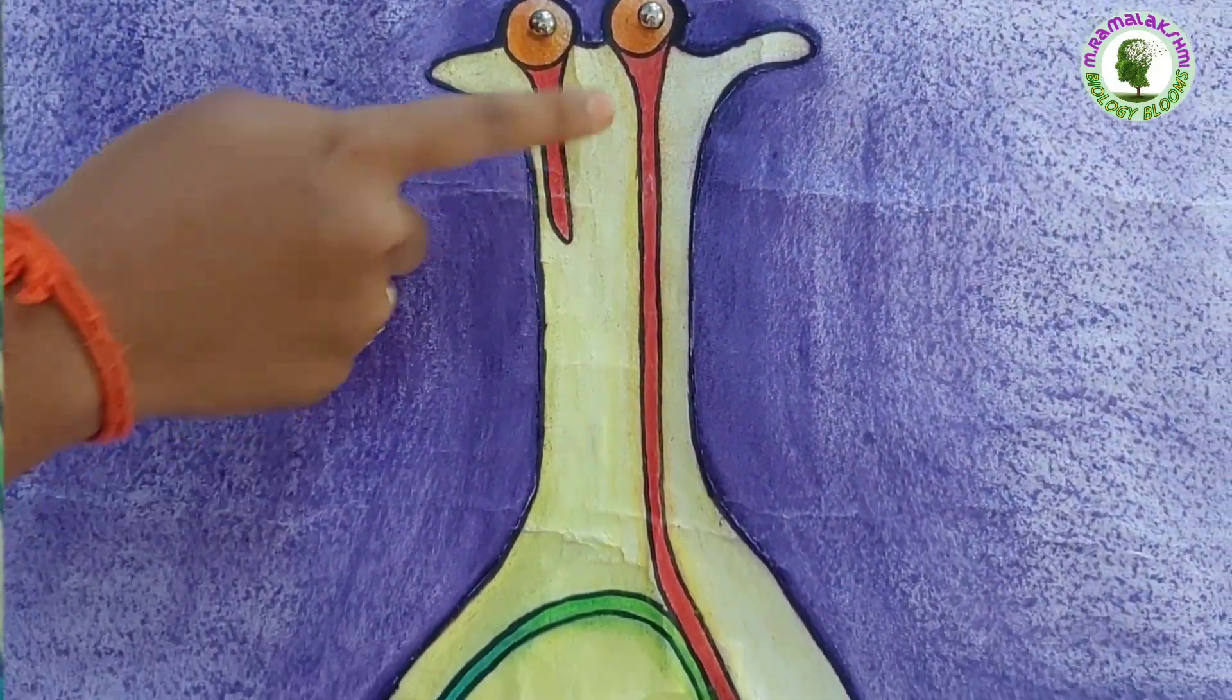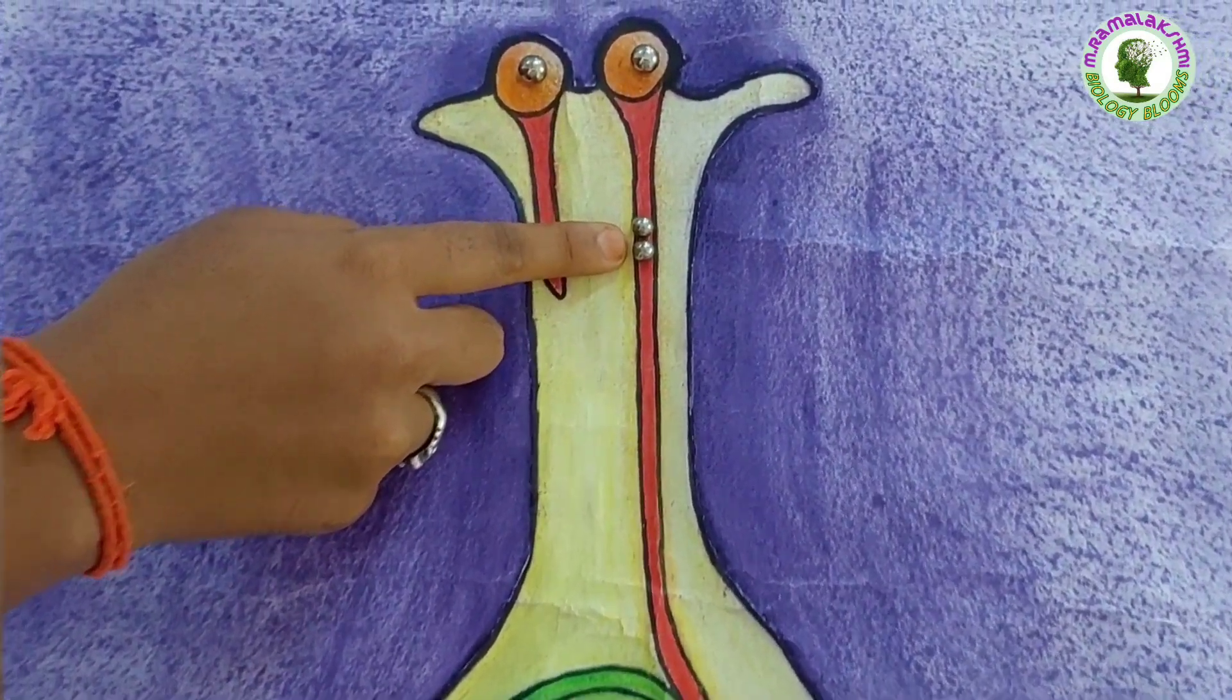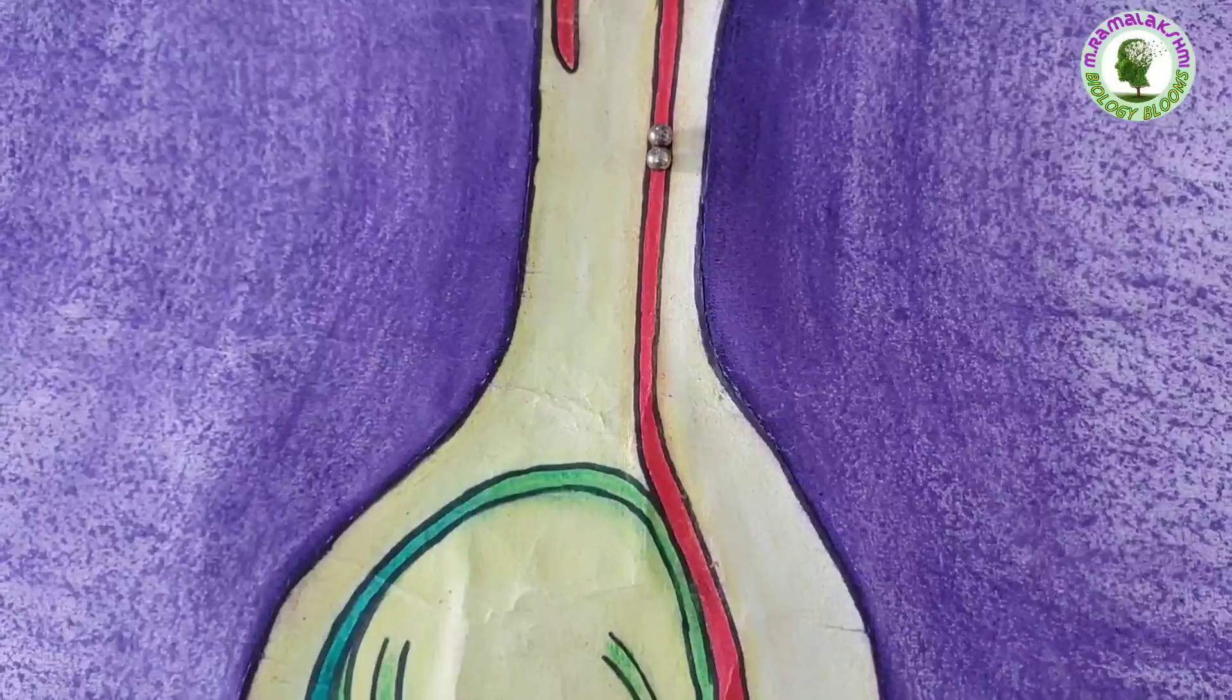This pollen tube contains 2 male nuclei. These 2 male nuclei travel through the pollen tube.